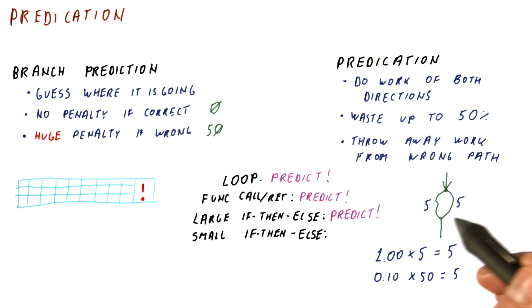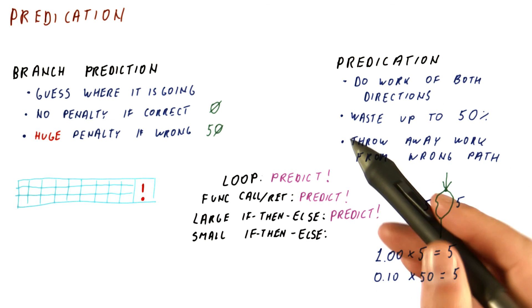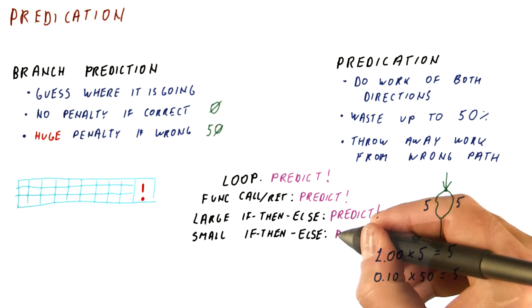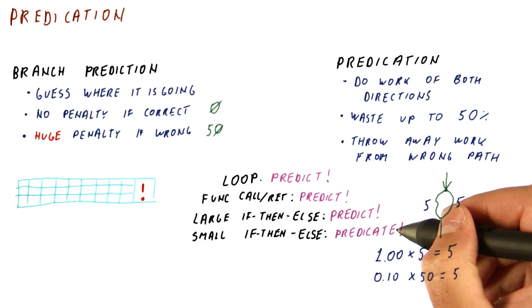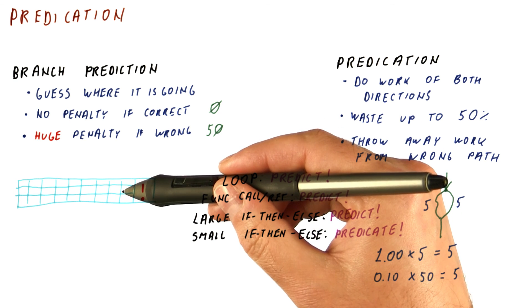If the if then else is even smaller, then it biases things more in favor of predication and less in favor of branch prediction. So for really small if then else's, we want to predicate unless we are reasonably sure that our branch prediction is going to be highly accurate.